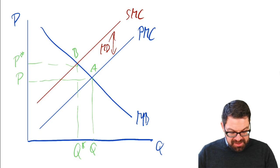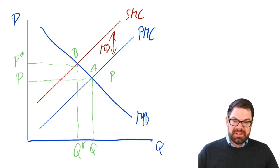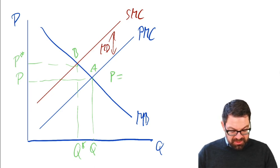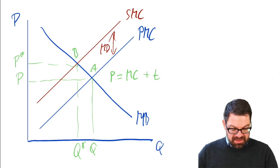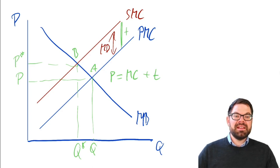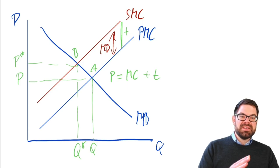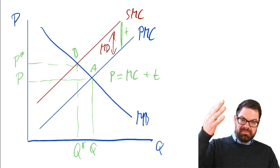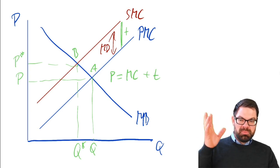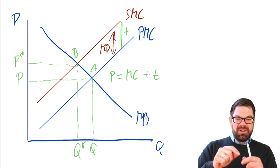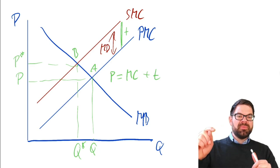How does the tax work? The final price of the good equals the marginal cost of the firm plus a tax, and the idea is that the tax is exactly as high as the marginal damage. This shifts the firm's marginal cost curve upward, so the firm produces at a lower level. Part of that tax is passed on to consumers in the form of higher prices, but if done correctly it brings us exactly to point B — the socially optimal level of consumption.